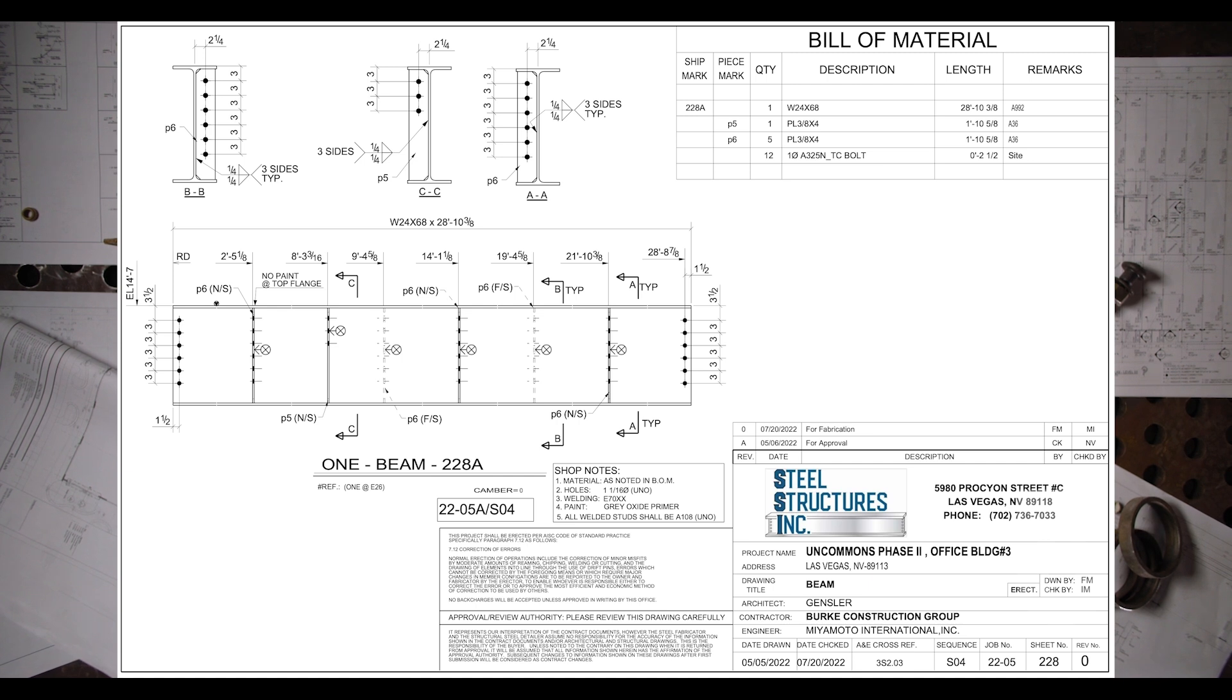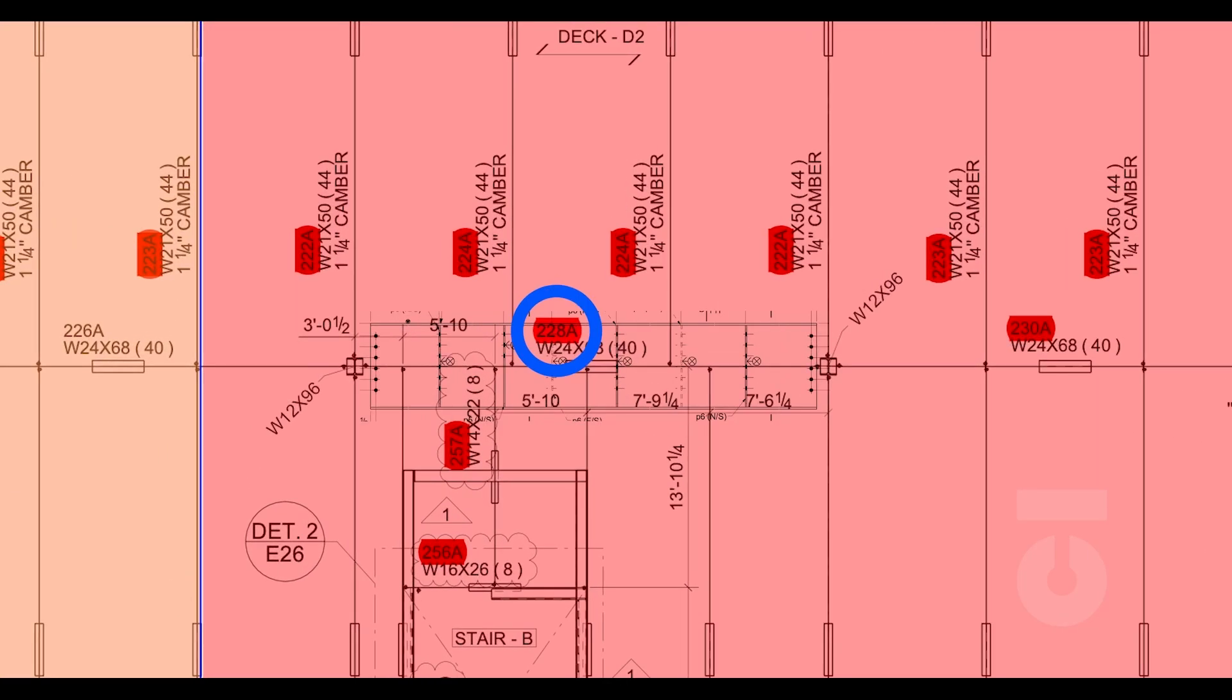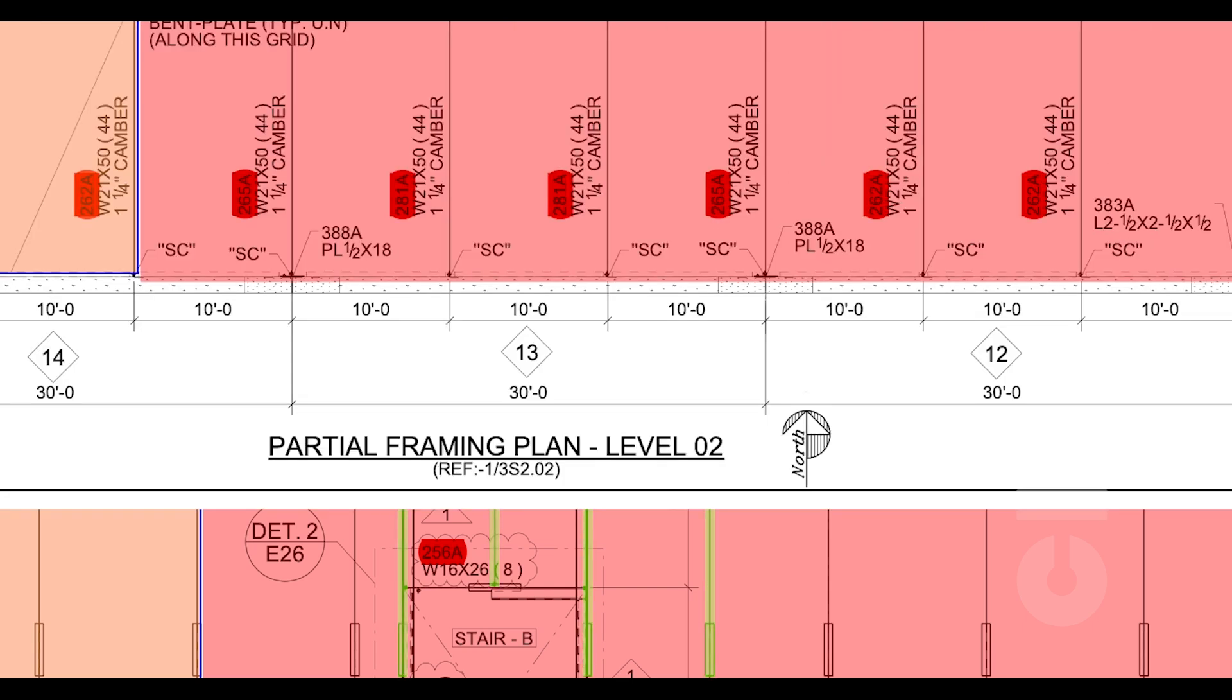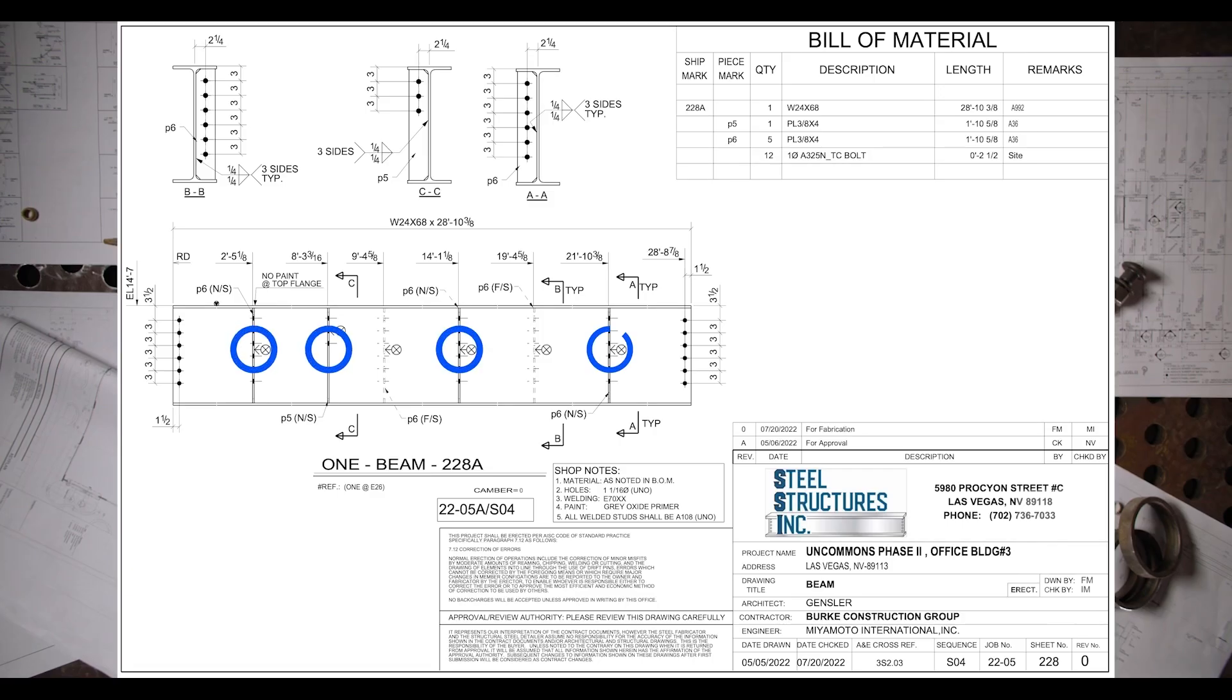If we look at our erection sheets, specifically the partial framing plan for level two, sheet E26 of our structure, we can see beam 228A here. Beam 228A will have four beams connected to it on the south face of the beam, south in reference to project north. On the north face of the beam, we will have two beams connected to this beam, here and here. So looking at our assembly drawing for assembly 228A, we can see that this side with the four plates will be our south face, and then this other side with two plates will be our north face. It doesn't hurt to mark face orientation on the beam if needed.